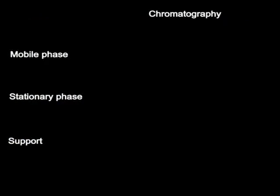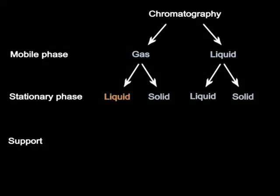Depending on the nature of the mobile phase, chromatographic methods are divided into two groups: gas chromatography, when the mobile phase is a gas, and liquid chromatography, when the mobile phase is a liquid. The stationary phase can be a solid, or a liquid supported on a solid or a gel.